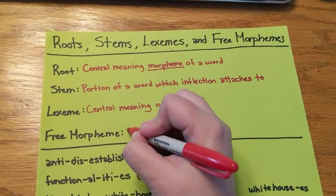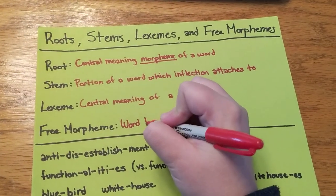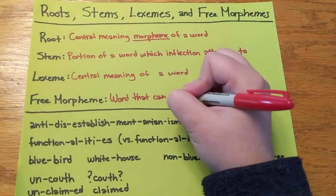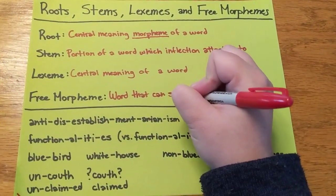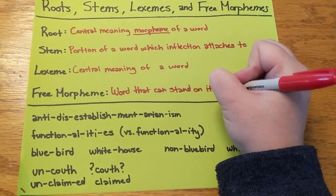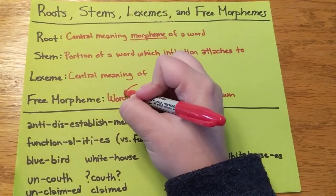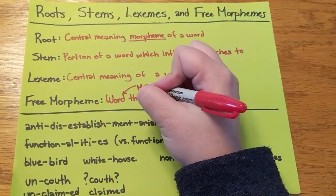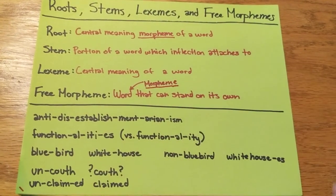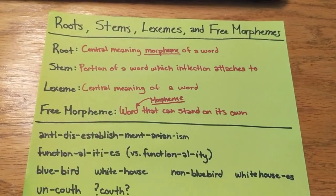A free morpheme is a morpheme that can stand on its own. That means it has to be one little piece of meaning, and it can stand all by itself.